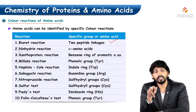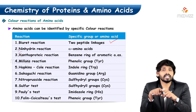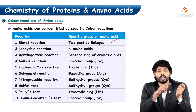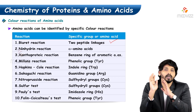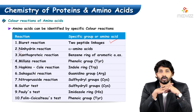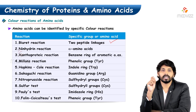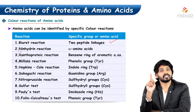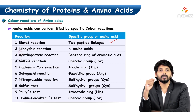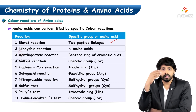The Hopkins-Cole reaction is specific to tryptophan, which carries the indole ring functional group. The indole ring reacts with the Hopkins-Cole reagent to give a positive result. Sakaguchi test is specific to arginine due to its guanidino amino group — only arginine gives a positive Sakaguchi test. The nitroprusside test is specific to sulfur-containing amino acids, especially cysteine. The Pauli test is specific to histidine, and the Folin-Ciocalteu test is specific to the phenol group.